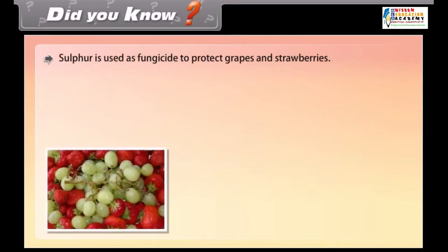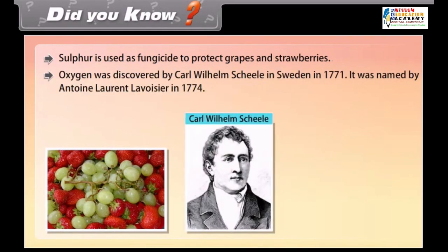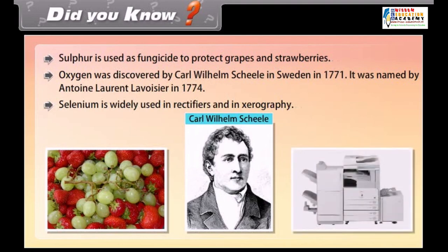Did you know? Sulphur is used as fungicide to protect grapes and strawberries. Oxygen was discovered by Carl Wilhelm Scheele in Sweden in 1771. It was named by Antoine Laurent Lavoisier in 1774. Selenium is widely used in rectifiers and in xerography.